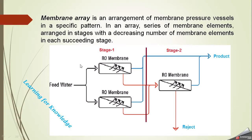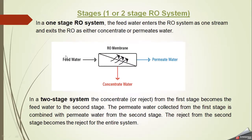Now we come to stages. In a one-stage system, the feed water enters the RO system as one stream and exits as either concentrate or permeate water. So this RO membrane receives feed water and produces two streams: clean permeate water and reject or concentrate water. If only one membrane module, element, or pressure vessel is involved, this is called a one-stage system.